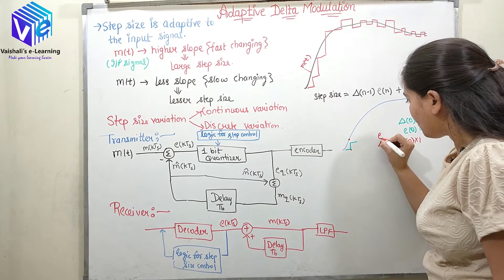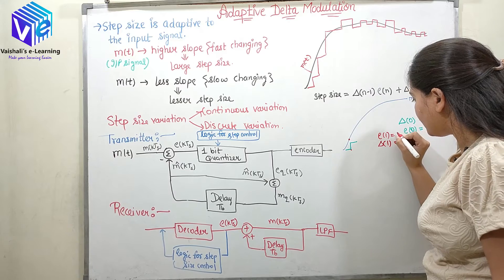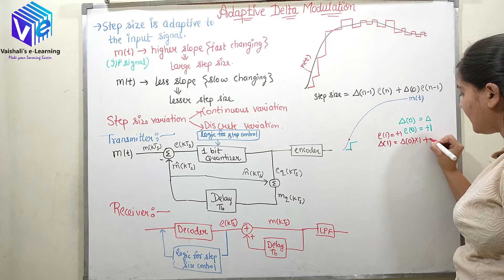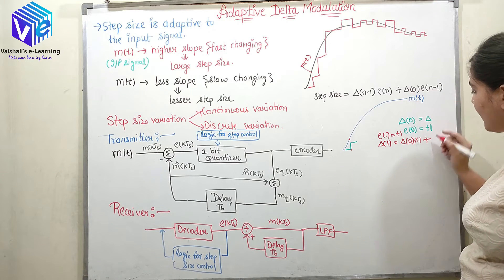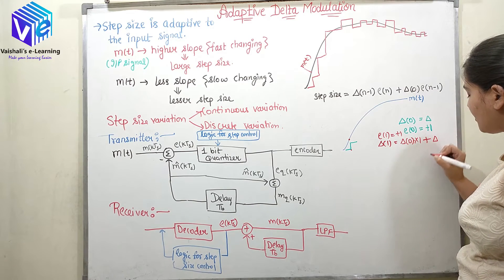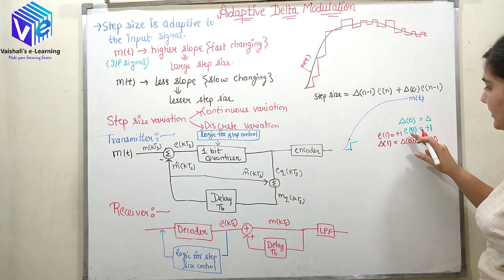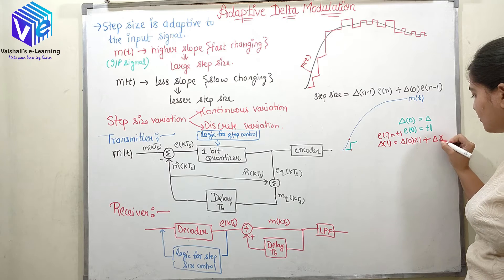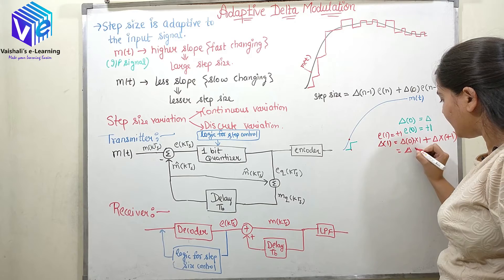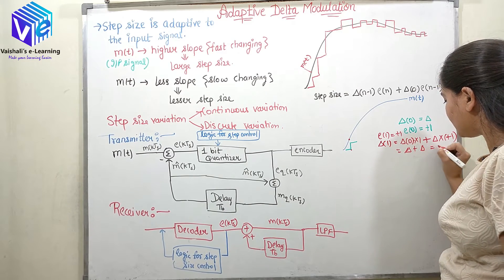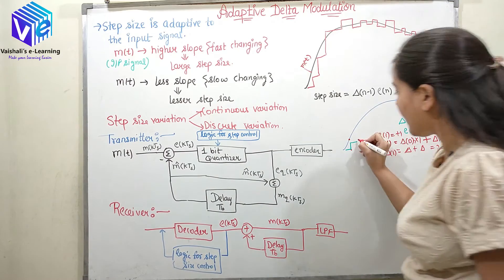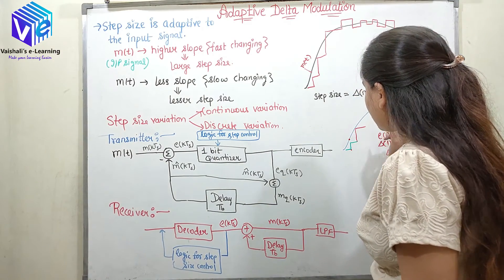E(1) is again positive 1. Now it is added to δ₀. What was δ₀? It was δ, and what was E(n−1)? E(0) was plus 1. So δ multiplied by plus 1. Now δ₀ is again δ plus δ, which is 2δ. So δ(1) is 2δ — here I will be having 2δ step size.